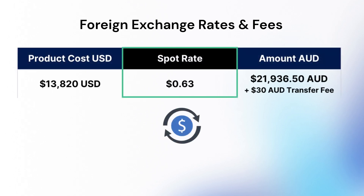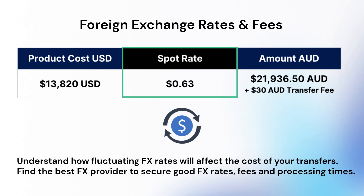For example, a supplier's FOB proforma invoice showing a product cost of $13,820 USD. Making a swift TT payment using Australian dollar funds, when checking the live interbank exchange rate it shows 0.65, but a foreign exchange provider offers a spot rate of 0.63 plus a $30 fee. Using that spot rate, paying the supplier's invoice will cost $21,936.50 AUD plus the $30 transfer fee. As foreign exchange rates can be volatile, research the best FX rates and fees from payment providers, along with payment processing times.